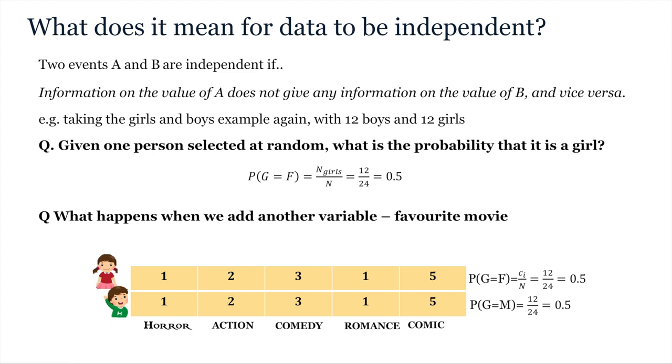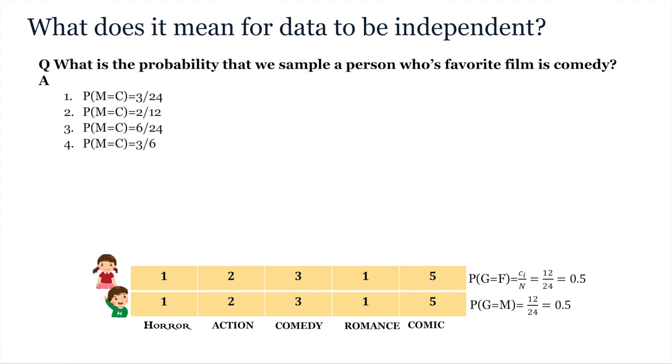Notice also that we can calculate our different probabilities by summing over rows and columns of this table. So the probability of selecting a girl can be calculated from the total number of samples in the row divided by the total number of samples for the whole table. Using the same reasoning, can you calculate the probability that we sample a person whose favorite film is comedy? Please stop the video and answer this question in the Keats quiz. The answer will be given there.